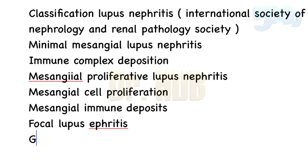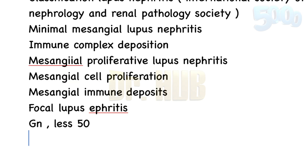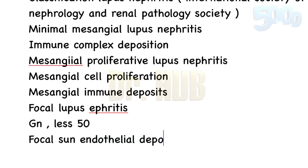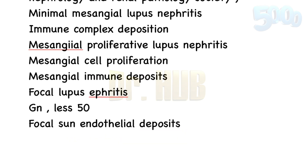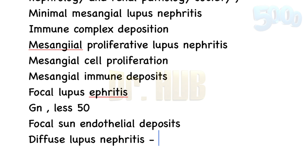Class 3 is focal lupus nephritis. This is a focal segmental glomerulonephritis involving less than 50% of all glomeruli, with focal subendothelial deposits, with or without mesangial changes.